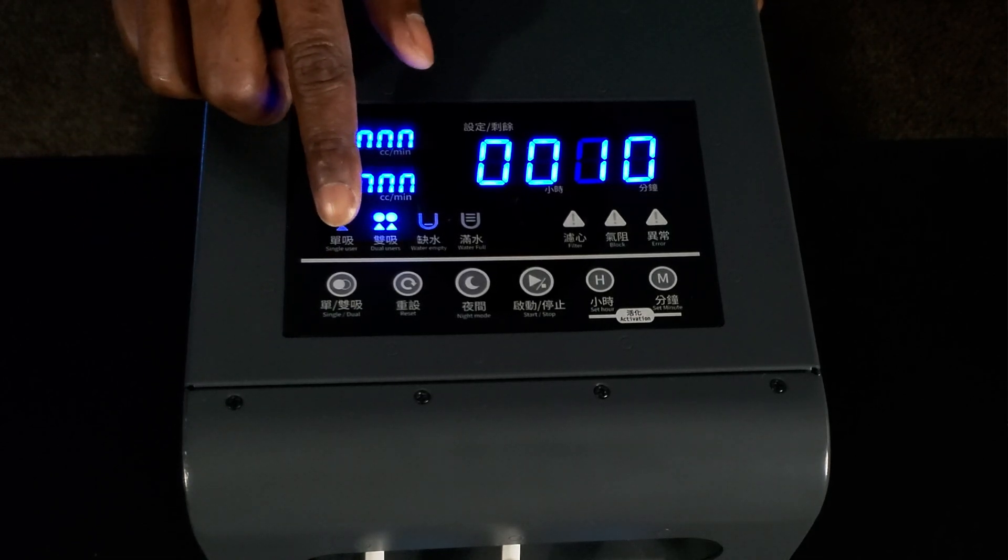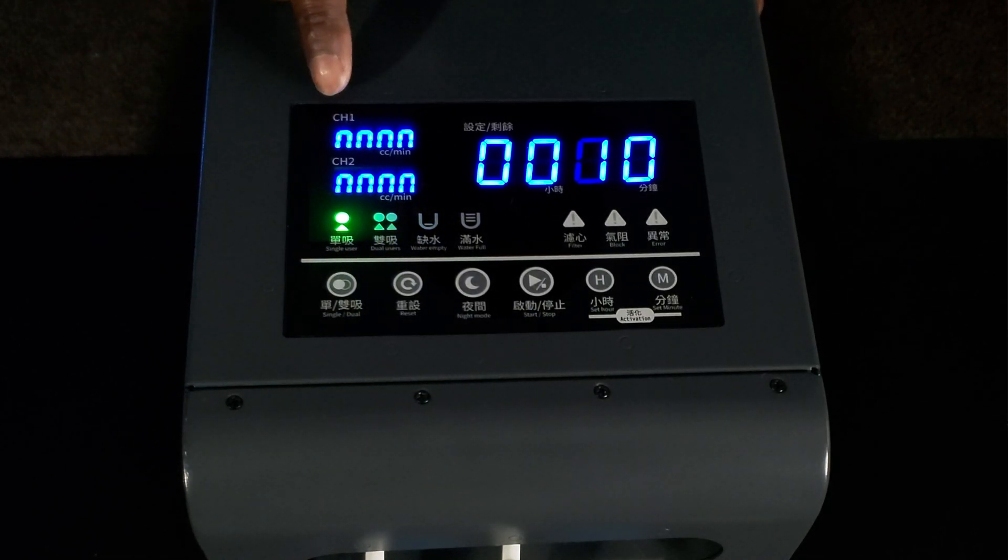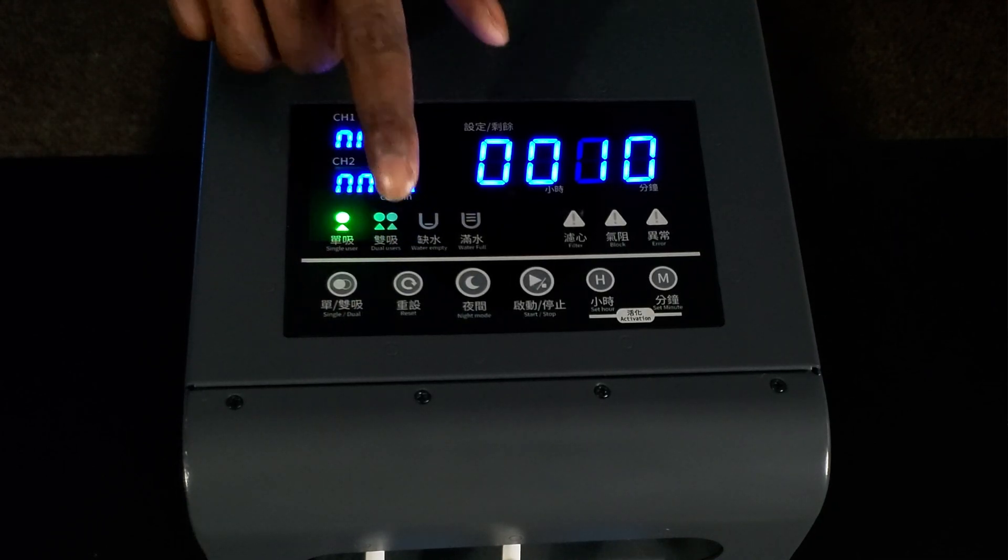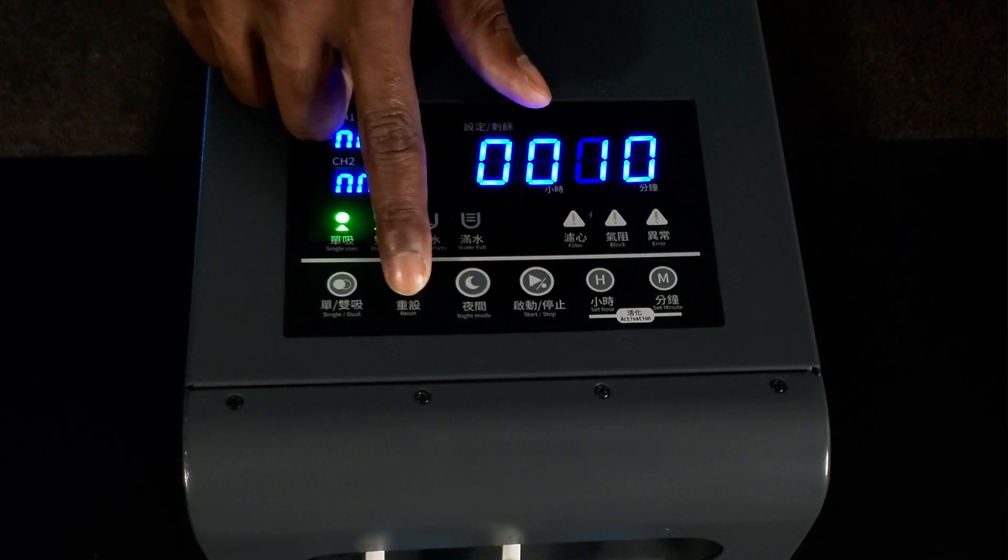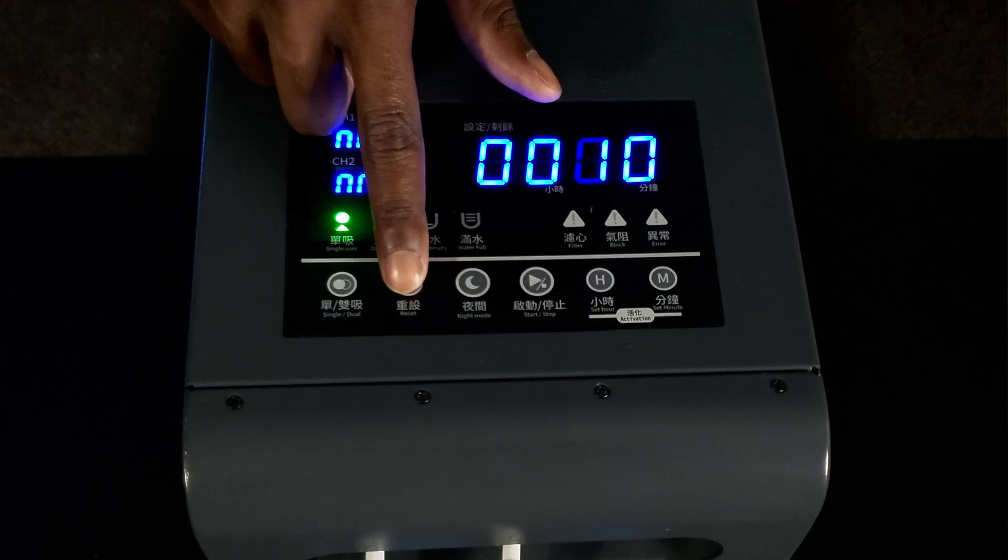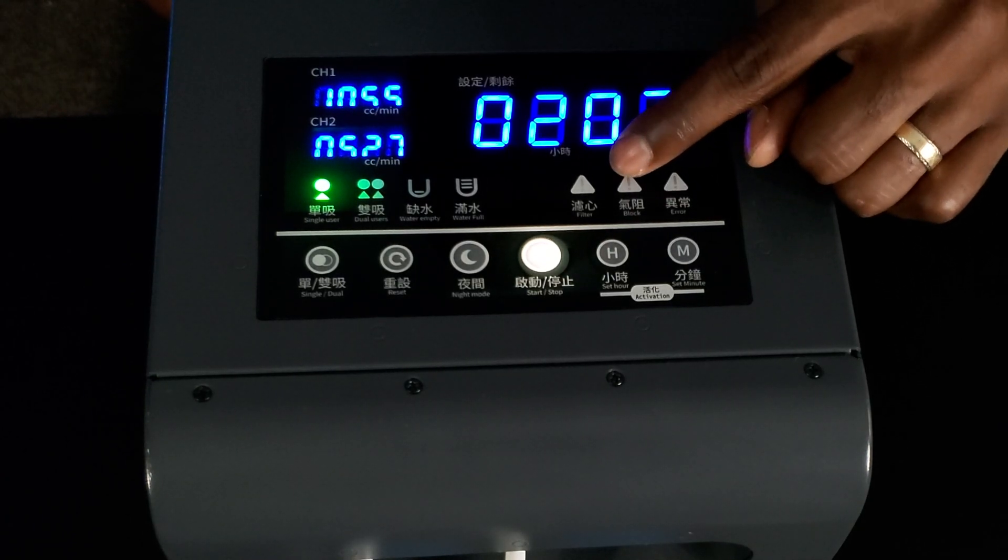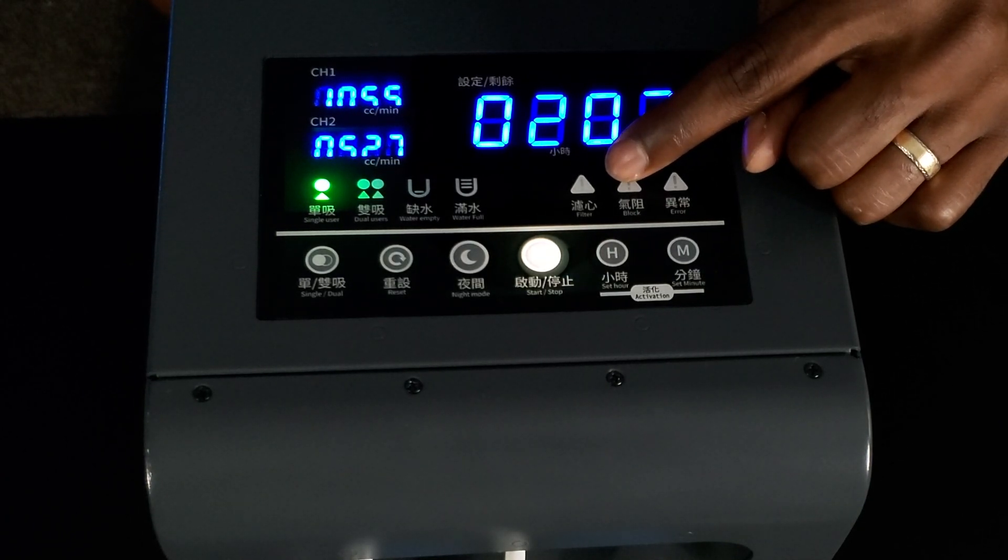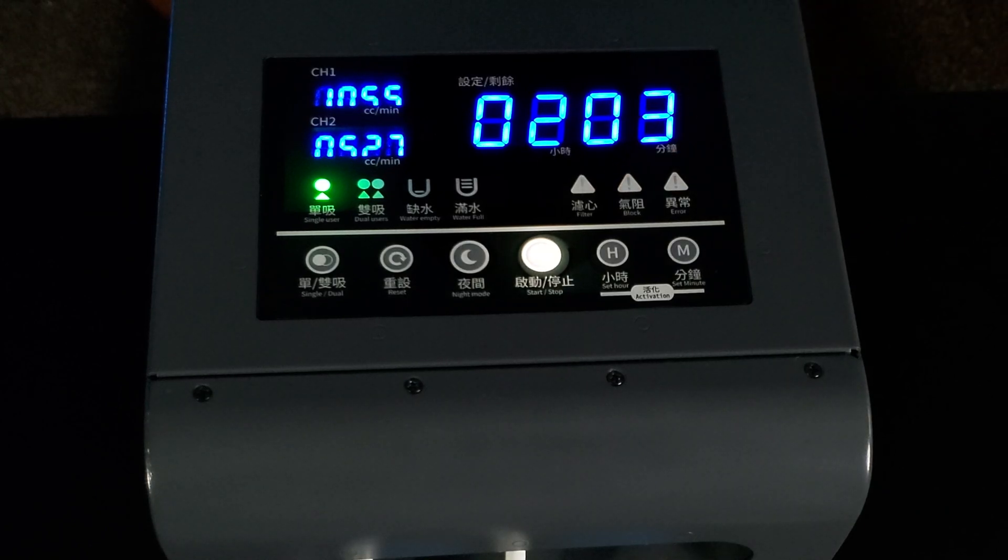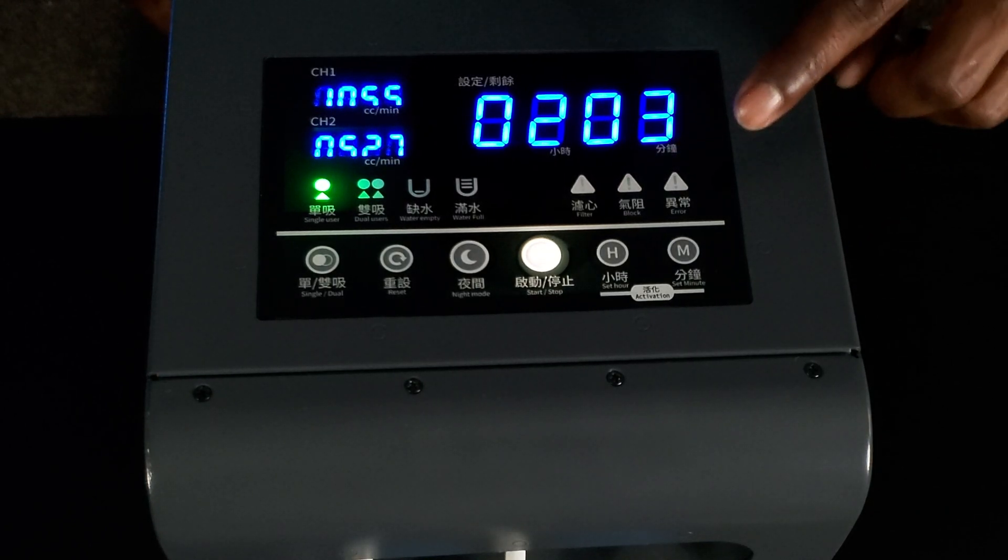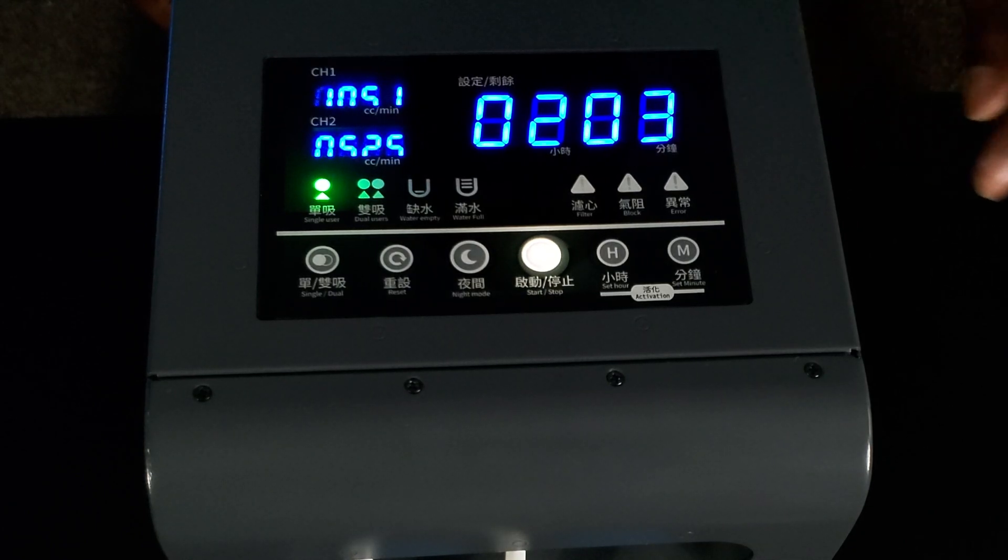The single slash dual user button allows you to select either a single user or a dual user. The reset button allows you to reset the system once the filter indication light appears. This means it's time to replace the filter and put a new filter in the system. If the gas blockage indication light appears then you can also press the reset button to reset the system once the gas blockage is removed. Lastly, if the air indication light appears you can also use the reset button to reset the system.